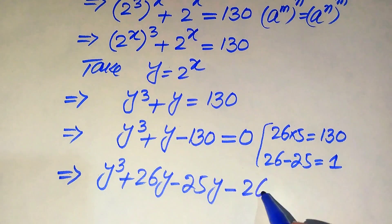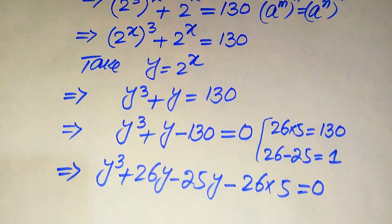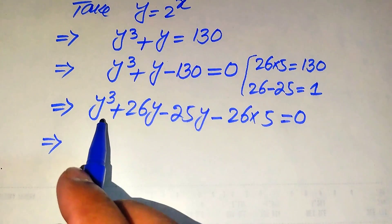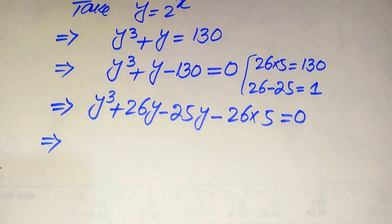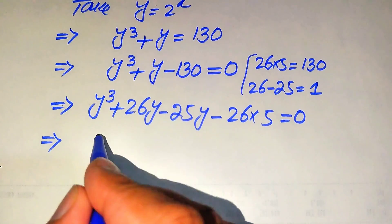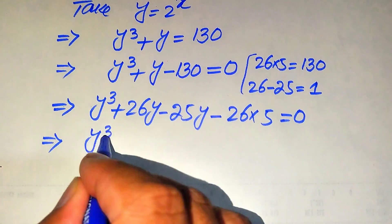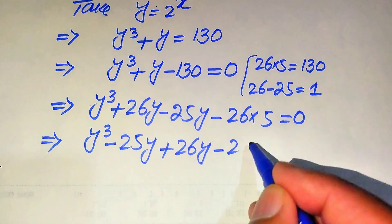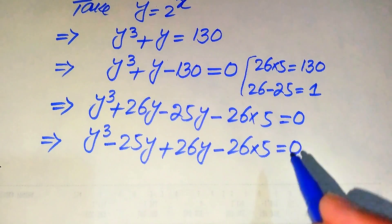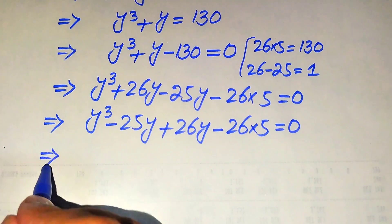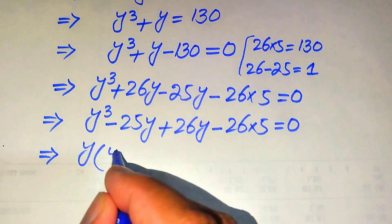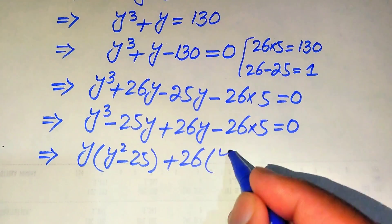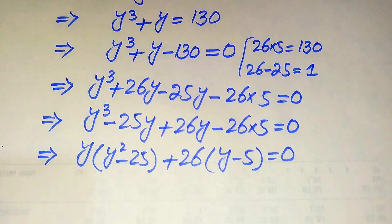Using these numbers we break the middle term and write the equation as y cubed plus 26y minus 25y minus 26 times 5 equals 0. Rearranging, we get y cubed minus 25y plus 26y minus 130 equals 0. Taking y common from the first two terms gives y(y² − 25), and taking 26 common from the last two terms gives 26(y − 5), all equals 0.